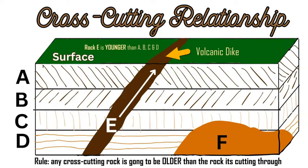Rock E could have been an intrusive dike, a volcanic dike, or any kind of igneous rock that is volcanic in nature because it reaches the surface — so a basaltic floodplain perhaps. Then we have rock F, which goes through rock D and rock C but not rock B. So we assume that F is younger than both rocks C and D because it's going through them, but rocks A and B close to the surface are possibly younger than rock F.